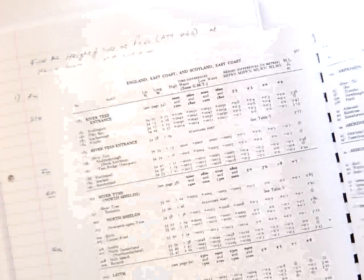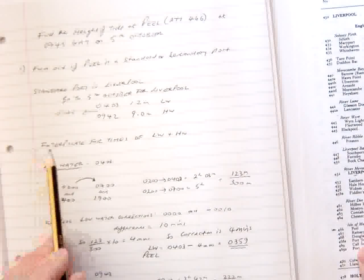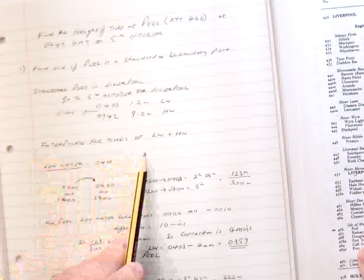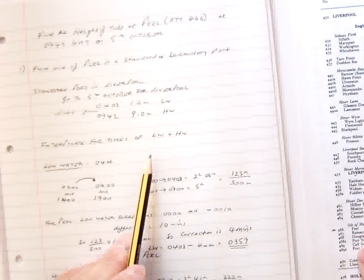So what we now have to do, we go back to the back of the book there and find Peel again. And we have the information on Peel here. Just going to have a quick chat about what we do. In this first part, we're just going to interpolate to find the times of low water and high water for Peel.